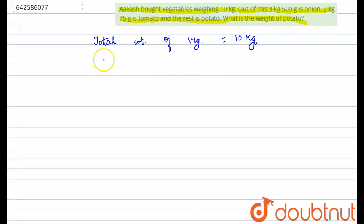And weight of onions is 3 kg 500 grams. It can also be written as 3.5 kg because 500 grams is equal to 0.5 kg.